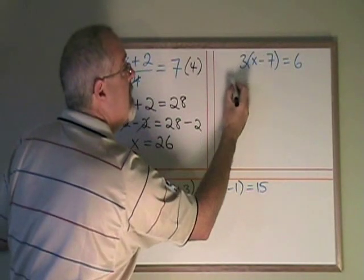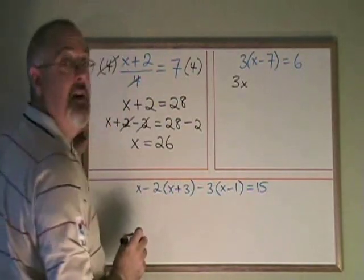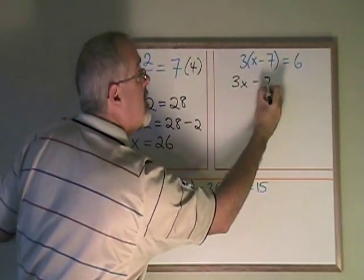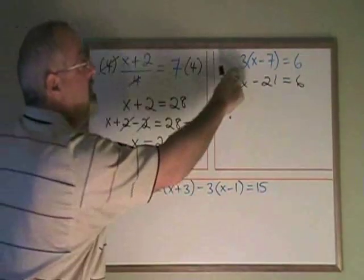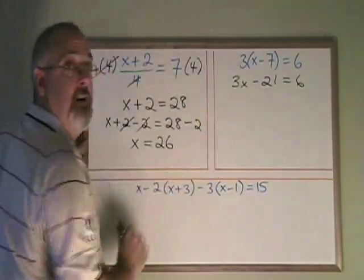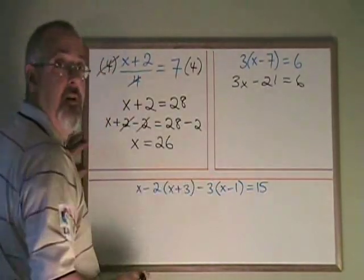3 times x is 3x. 3 times negative 7 is minus 21. A positive times a negative is a negative. Now we're back to our regular algebra.